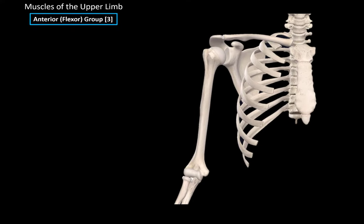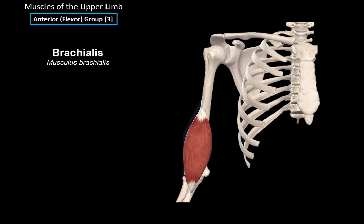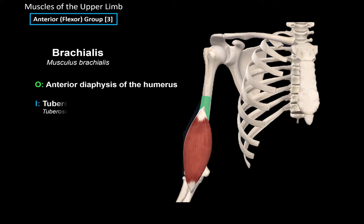The first muscle of the anterior group is the brachialis muscle. This muscle originates from the anterior diaphysis of the humerus and then it inserts at the tuberosity of the ulna. When this muscle contracts, it pulls the ulna upwards and flexes the lower arm.